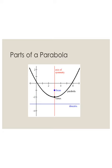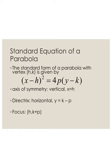We're going to identify how to calculate each one of these parts of our parabola. We have two different standard equations. For a vertical parabola, the standard form with vertex (h, k) is: (x − h)² = 4p(y − k). The x-squared component tells me this is a vertical parabola, opening up or down. The axis of symmetry is x = h. The directrix is the horizontal line y = k − p. And the focus is the point (h, k + p).